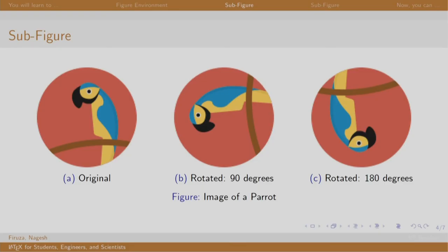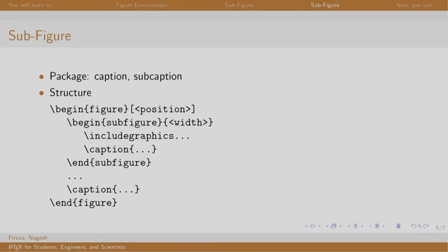Usually in thesis, project reports, etcetera, one can have complicated figures containing multiple images. For example, instead of including three images as three separate figures to show the parrot example, we could have these under one single figure itself. To accomplish this, one must include the caption and subcaption packages. We write the figure environment which is followed by the subfigure environment. The width of the subfigure needs to be mentioned. Each subfigure has its own caption. Let us see a demo.